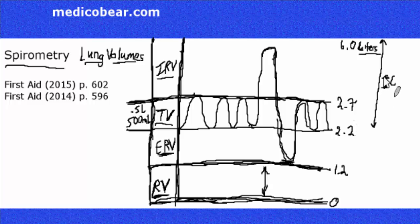Inspiratory capacity is our inspiratory reserve volume plus our tidal volume. Expiratory reserve volume plus our residual volume is our functional residual capacity, that's FRC. And everything except the residual volume added up together is our vital capacity, our VC. It's the IRV plus the TV plus the ERV, that equals our VC.